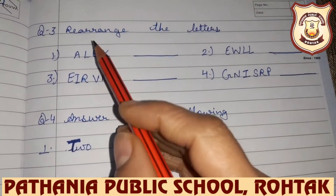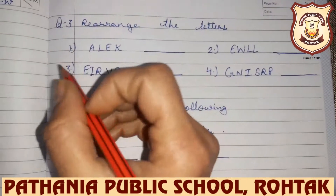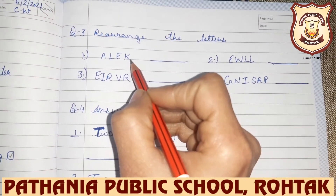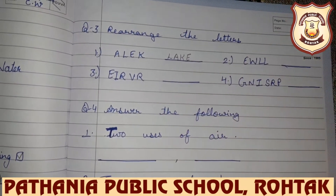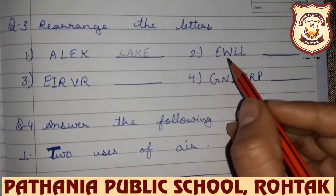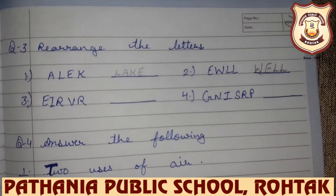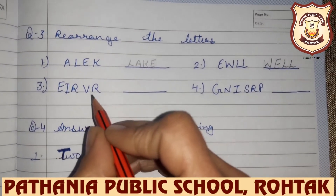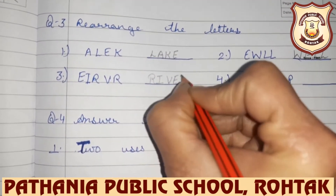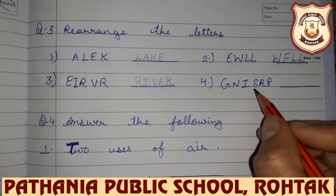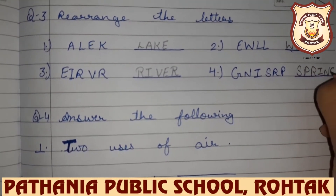Question number three is rearrange the letters. The letters are jumbled and you have to arrange them. A-L-E-K — it is a source of water — it will become L-A-K-E, lake. Number two: E-W-L-L — it will become W-E-L-L, well. Number three: E-I-R-V-E-R — it will become R-I-V-E-R, river. Number four: G-N-I-S-R-P — it will become S-P-R-I-N-G, spring.